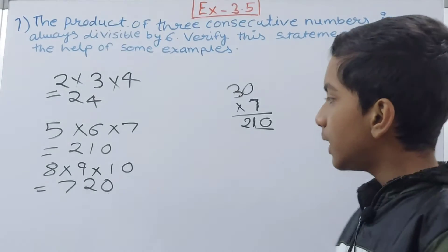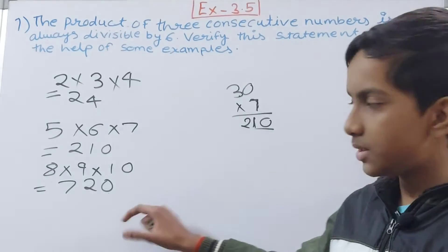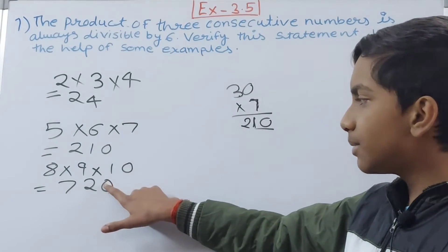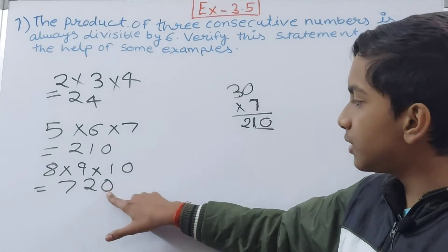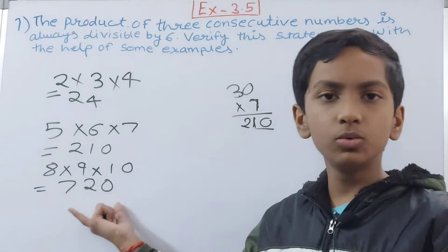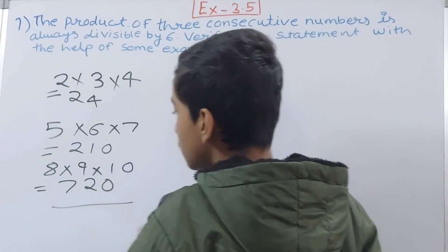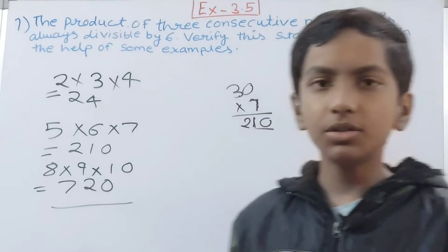Is 720 divisible by 6? Again, we will use the divisibility test. Is it divisible by 2? Yes, we have 0 at the ones place. By 3? 7 plus 2 is 9, so yes it is divisible by 3 also. That means it is also divisible by 6.